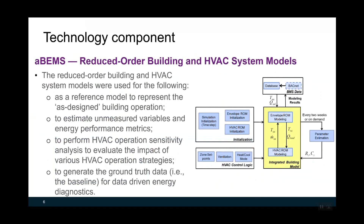The reduced order model was used for the following purposes. First, we can use the reduced model as a reference model to represent design and building operation. It can also be used to estimate unmeasured variables and energy performance metrics. We can also use the reduced model to perform HVAC operation sensitivity analysis to evaluate the impact of various HVAC operation strategies — essentially conducting if-then analysis. Finally, the reduced model is used to generate ground truth data for data-driven energy diagnostics. The figure on this slide shows the coupling procedure between the building envelope reduced model and the HVAC reduced model, along with HVAC control logics.